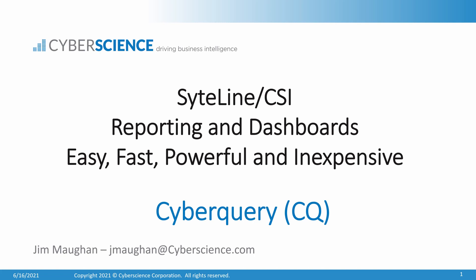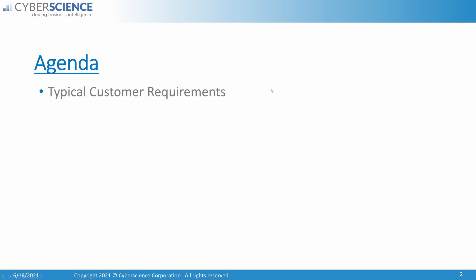We're going to follow this agenda: discussing typical customer requirements for people using Sightline or CSI — I sometimes use those terms interchangeably. Our software works the same whether you're on-prem on Sightline 10, 9, 8, 7, all the way back to Symex 4, or any version of Sightline on-prem. It also works the same with CSI in the cloud.